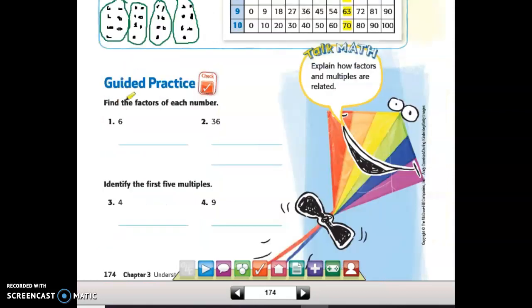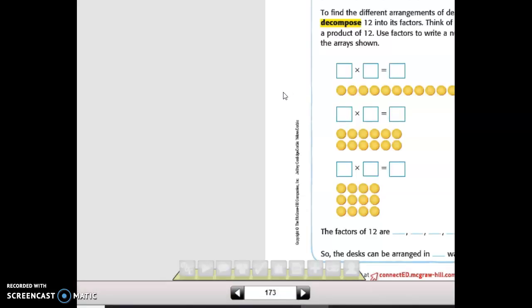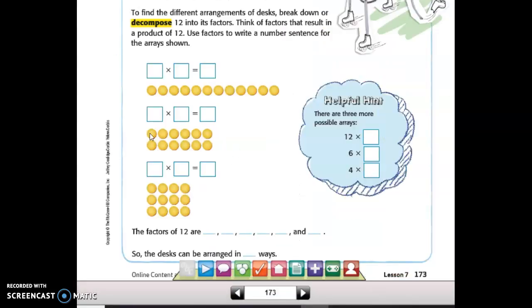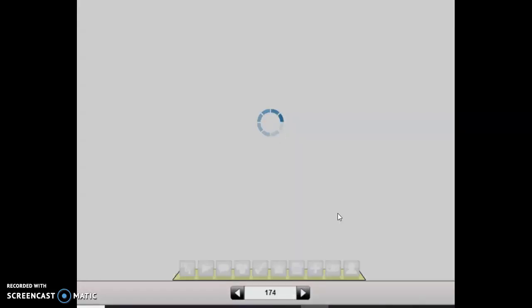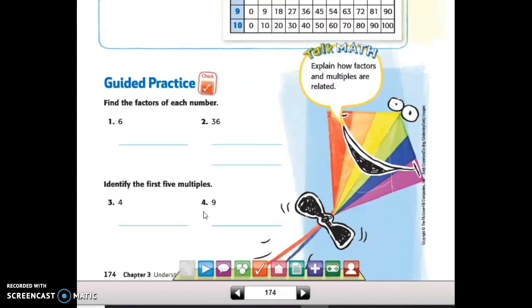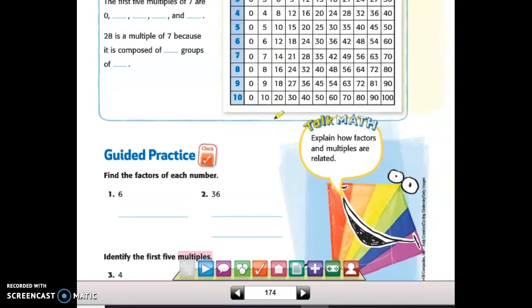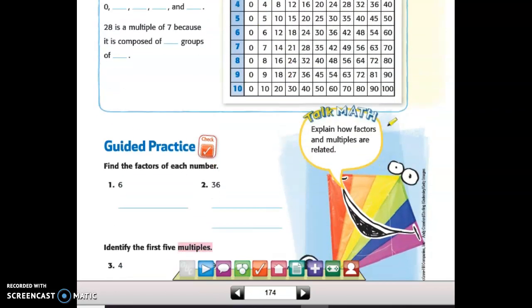So when you start doing your independent work, please make sure you pay attention to which type it's asking you for. First, 1 and 2, they want the factors, which was what we saw in the example on page 173. And for the second part, 3 and 4, they're asking you for the multiples, which are going to be in the rows or columns of your multiplication chart.